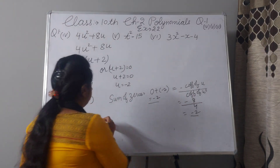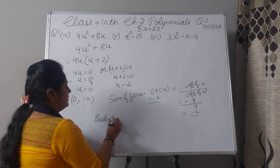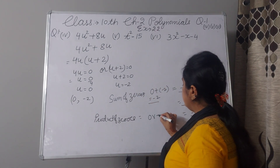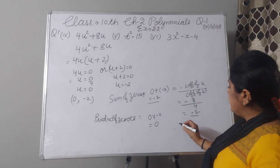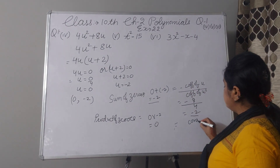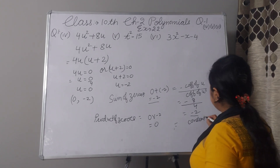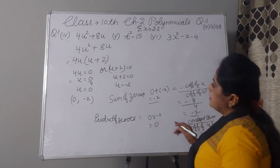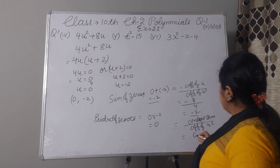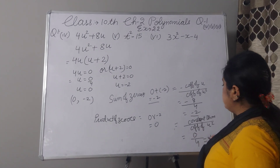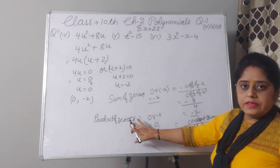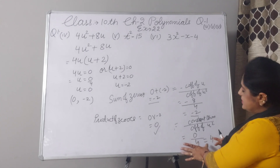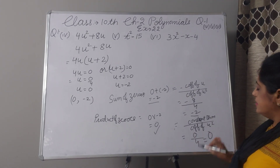Now, product of zeros. Product of zeros is 0 multiplied by minus 2, which means 0. The relationship formula is constant term divided by coefficient of u square. Here, the constant term is not there, so it is 0. Coefficient of u square is 4. So it is 0 divided by 4, which is 0. Product of zeros by factorization is 0 and by the relationship formula it is also 0. Hence verified.